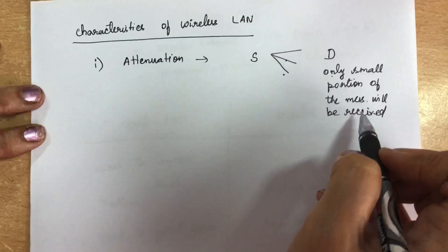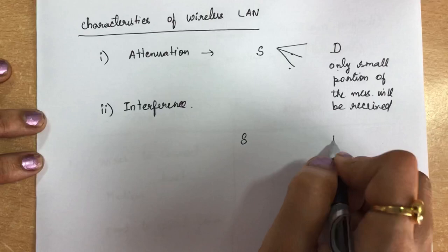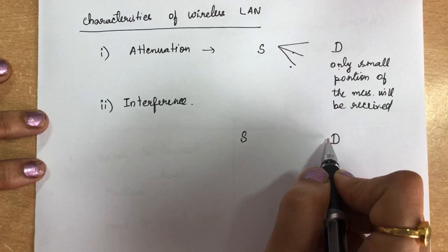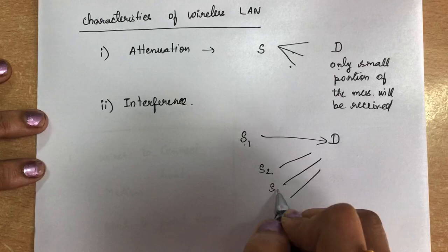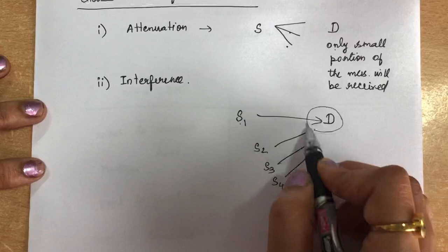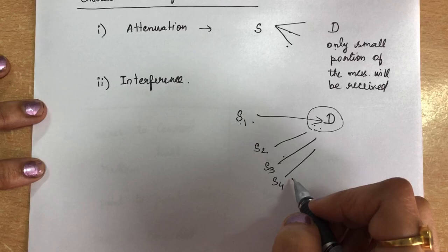The second characteristic is interference. The receiver may not receive signals only from the intended sender — it may also receive signals from other senders. For example, if sender 1, sender 2, sender 3, and sender 4 are all using the same frequency band, the destination will receive signals from all of them, and interference occurs at the receiver.